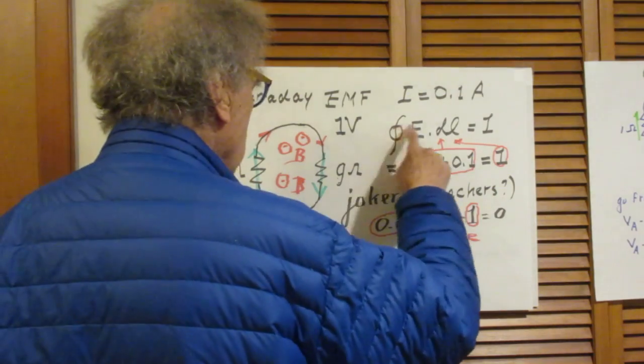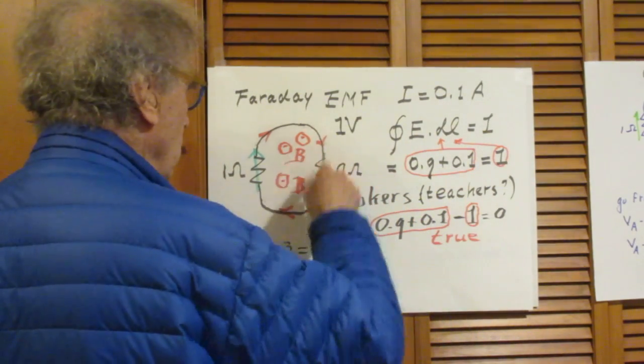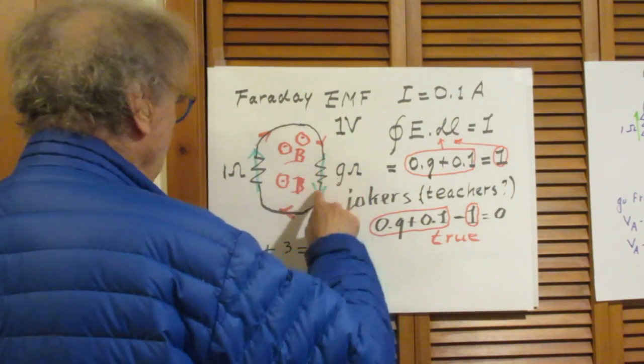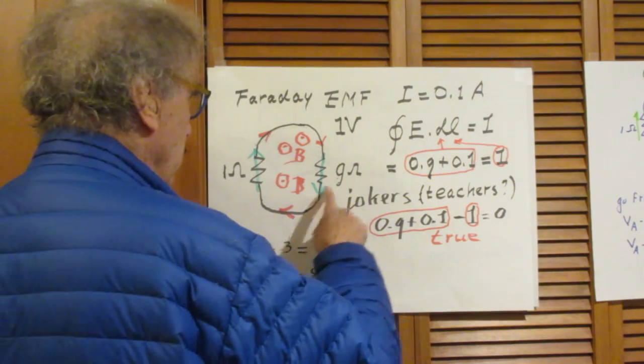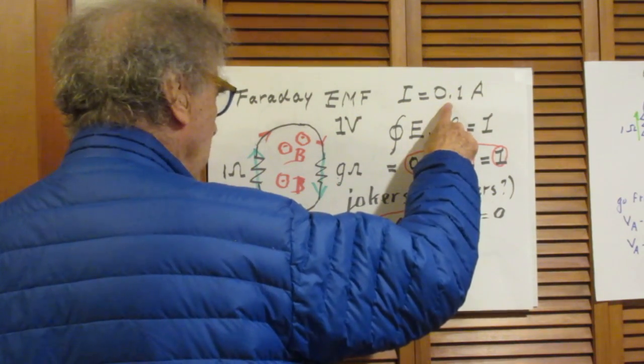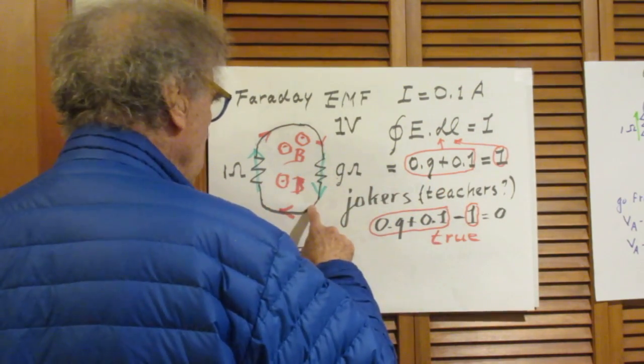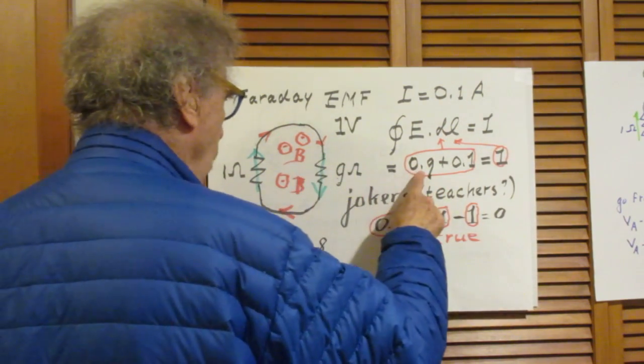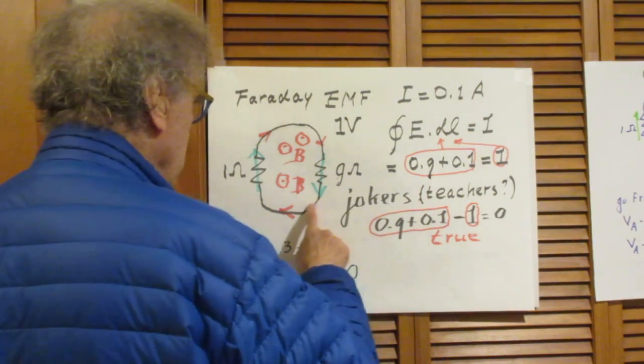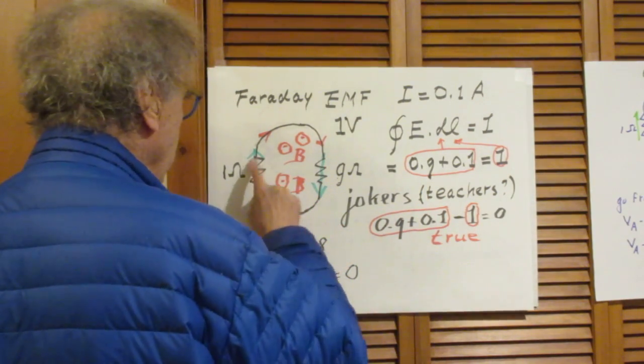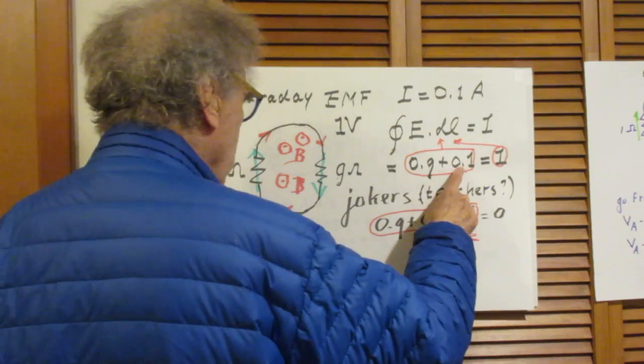So let's go around the circle. The first thing we do, we pass through this resistor. The current is 0.1 amperes. And so going from here to here, the integral E dot L is 0.9 volts. Nothing here. And then when we go from here to here, there is 0.1 volts.